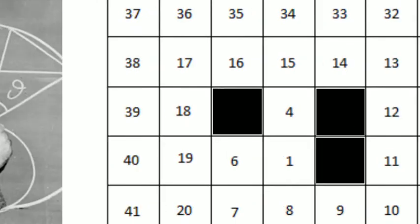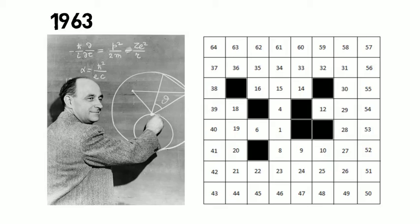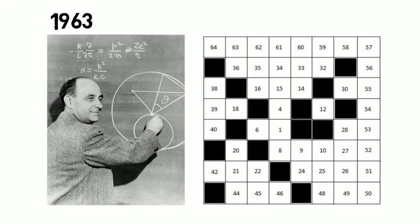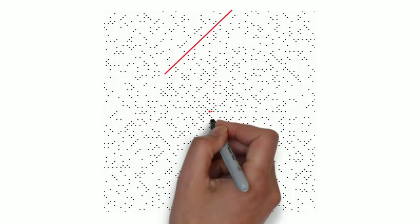He arranged positive integers in a square spiral and marked the prime numbers. He was surprised to find lines of extreme high and low densities.